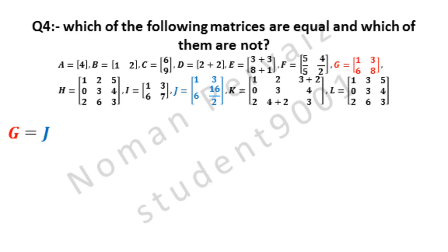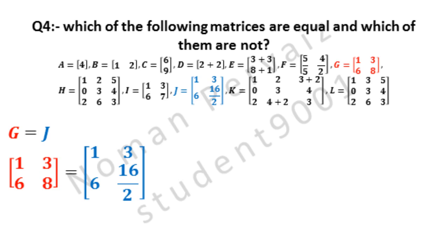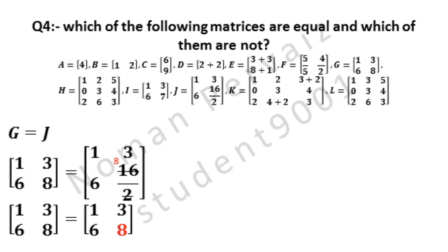The value of matrix G is 1, 3, 6 and 8 as represented by red color. And the value of matrix J is 1, 3, 6 and 16 by 2 as represented by blue color. 2 and 16 are cancelled; 2 ones are 2 and 2 eights are 16, so we write 8. All remaining terms come as they are. Since the values and orders of both matrices are same, both are equal.